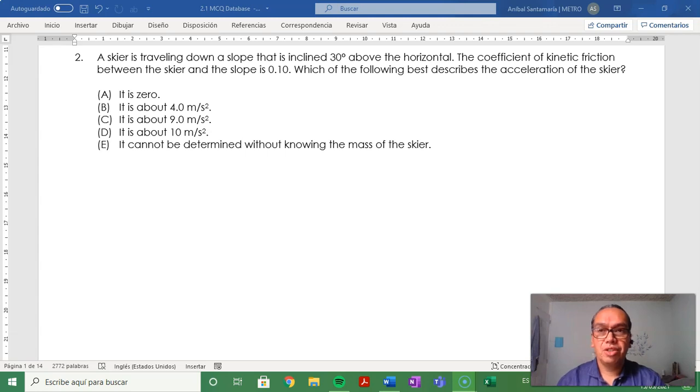Number 2. A skier is traveling down a slope that is inclined 30 degrees above the horizontal. The coefficient of kinetic friction between the skier and the slope is 0.10. Which of the following best describes the acceleration of the skier?